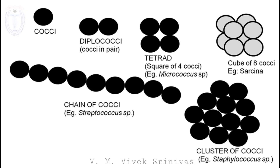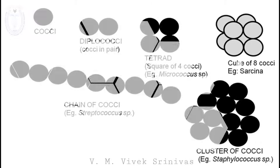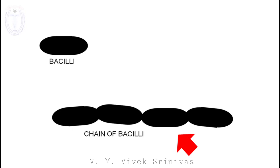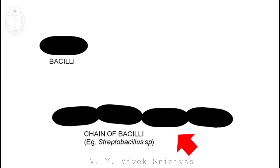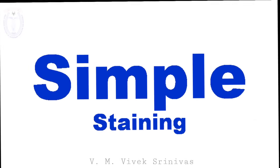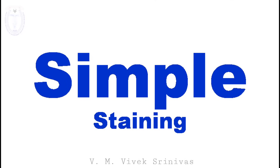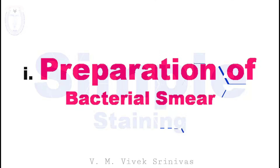The rod-shaped bacteria are called bacilli. They can be arranged as a chain of bacilli — the example being Streptobacillus species. Bacilli can also have a palisade arrangement — the example being Corynebacterium species. These are some arrangements noticed in bacilli. Coming to the simple staining technique, before staining we need to prepare the bacterial smear.